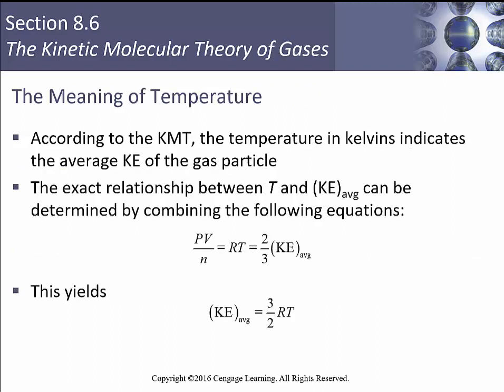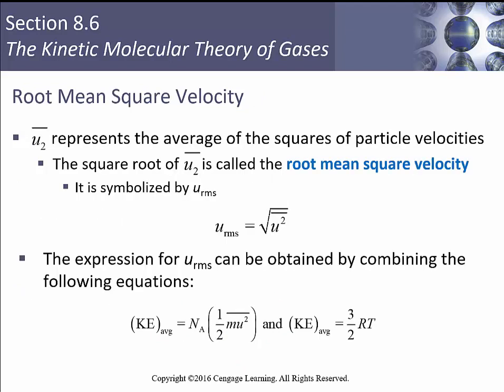Let's talk about the meaning of temperature. According to KMT, temperature in Kelvins indicates the average kinetic energy of the particle. The exact relationship between temperature and kinetic energy can be determined by combining those equations, giving KE = (3/2)RT. The root mean squared velocity — U-bar represents the average of the squares of individual velocities, and the square root of this is the root mean squared velocity, symbolized U_RMS.